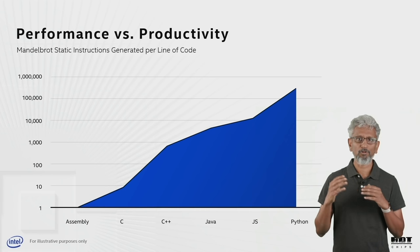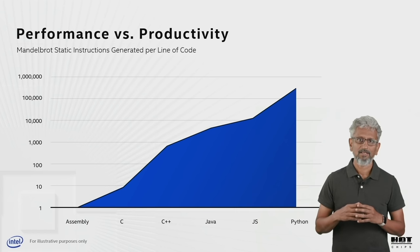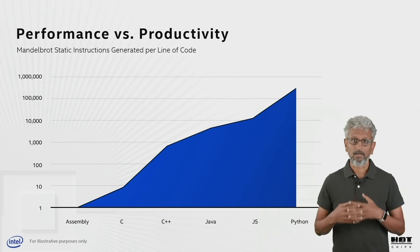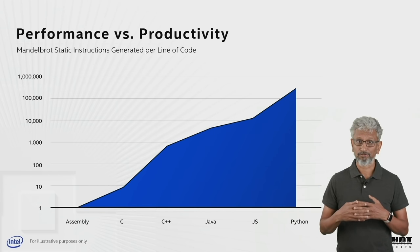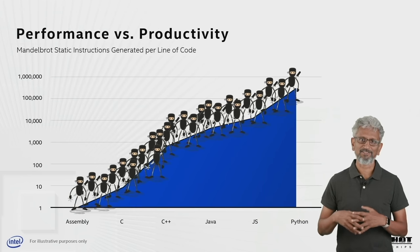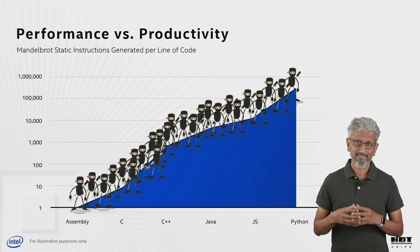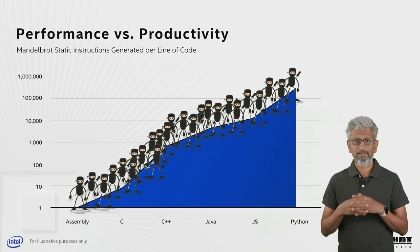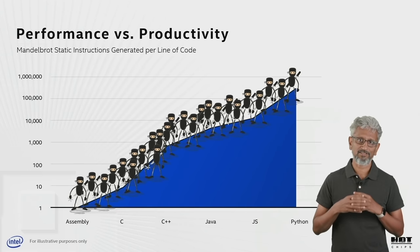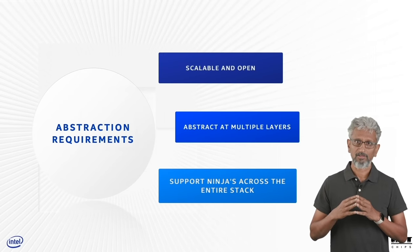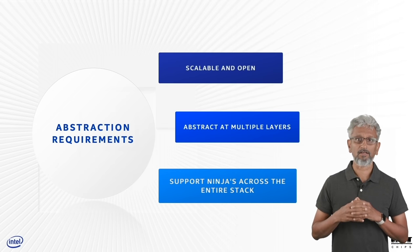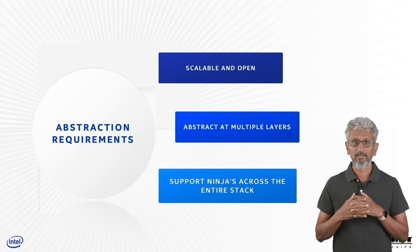Let's go back to our performance versus productivity picture. There is often a misconception that there are no performance-oriented applications written in Python or other more productive languages. There are special ninja programmers everywhere up and down the stack — people who do the magic of making software run very fast. But there are not very many of them and they are an increasingly diminishing breed, though a very important breed to maintain and cultivate. It is important to support ninjas across the stack while preserving the sanctity of non-leaky abstractions.